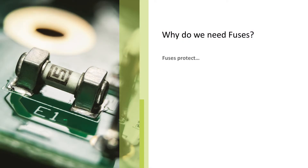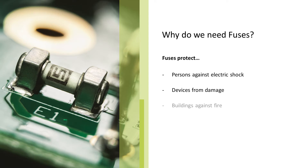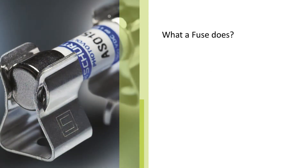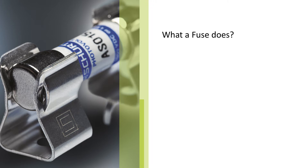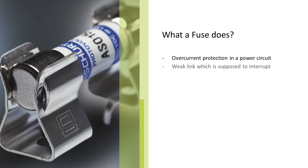Electrical circuits use fuses to prevent electrical overload to the circuit and possible fire stemming from that overloaded circuit. A fuse is an overcurrent protection against short circuits — it is a weak link which is supposed to burst or interrupt before any other component is damaged by that short circuit.